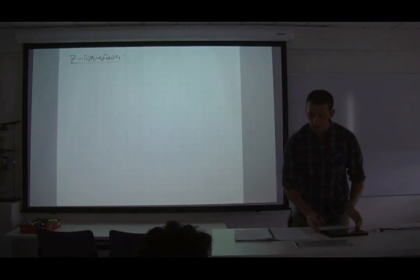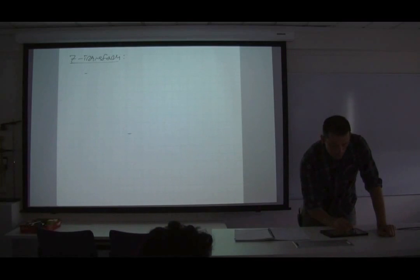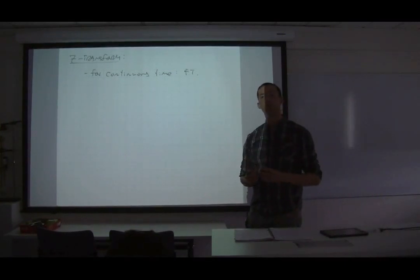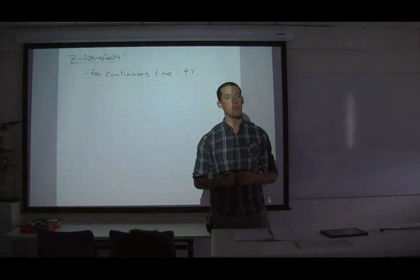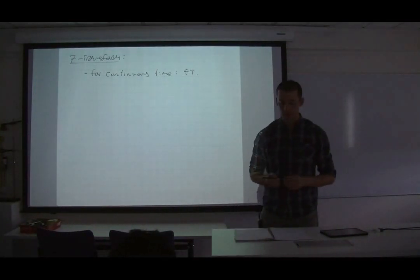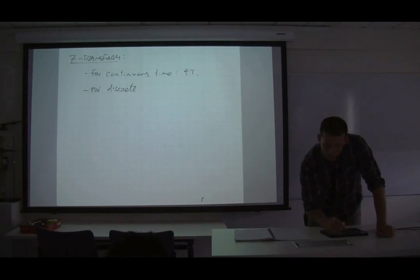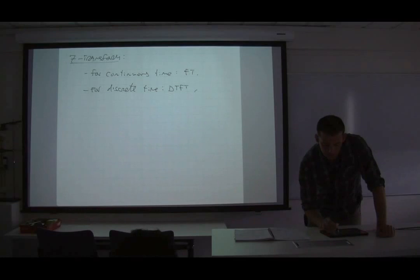For continuous time we use the Fourier transform or Laplace transform — Fourier for steady-state response, Laplace for a general response. For discrete time, last week we had the discrete time Fourier transform, or we can use the Z-transform, which we'll talk about now.